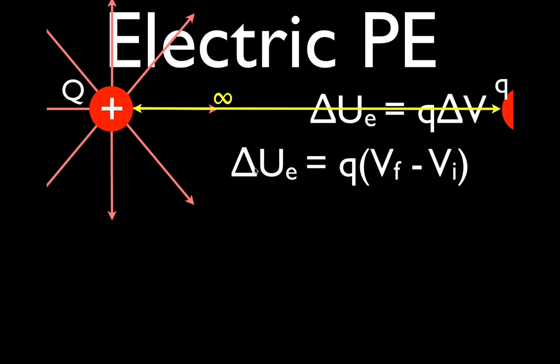It's also important to remember that the change in potential energy is not a vector — it's independent of the path taken. So it doesn't matter whether we drag this charge straight along a direct path or take it along a longer curved route and end up in the same place; it's just the change in the potential that matters.